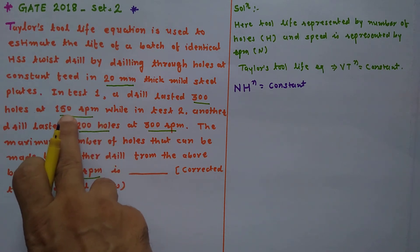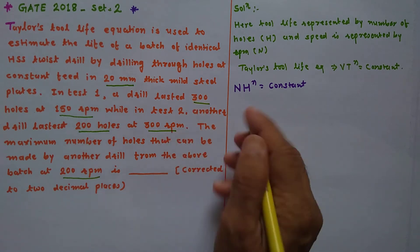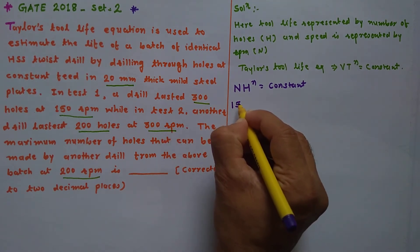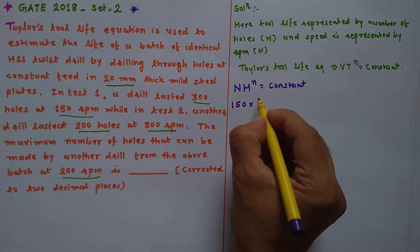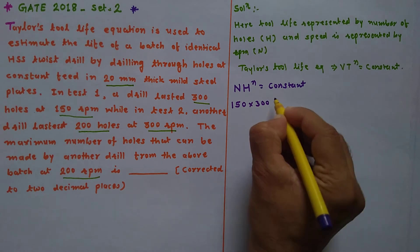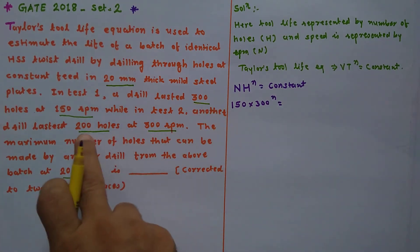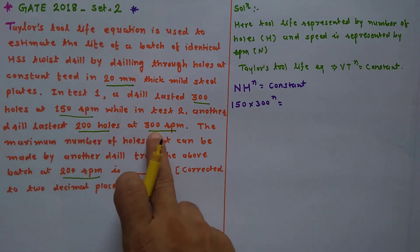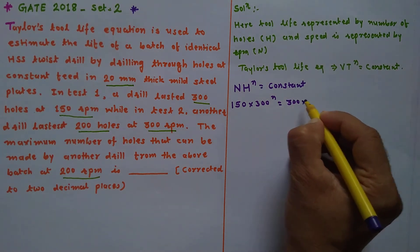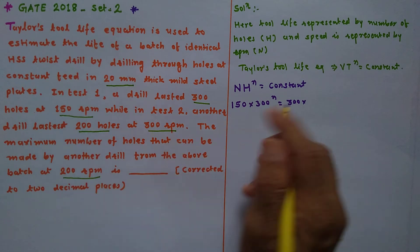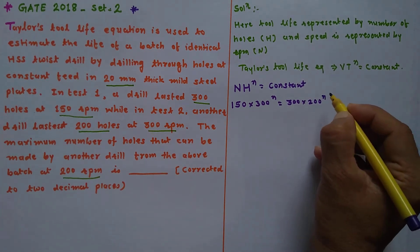For condition 1, we have 150 rpm and 300 holes, so: 150 × 300^n. For condition 2, we have 300 rpm and 200 holes, so: 300 × 200^n. Setting these equal gives us 150 × 300^n = 300 × 200^n.